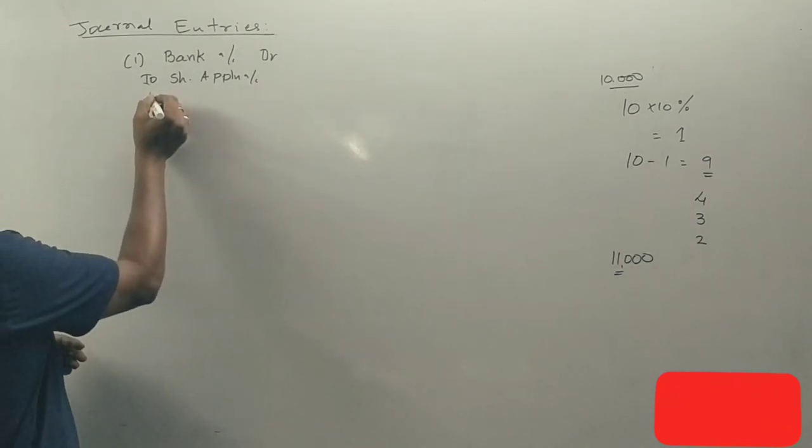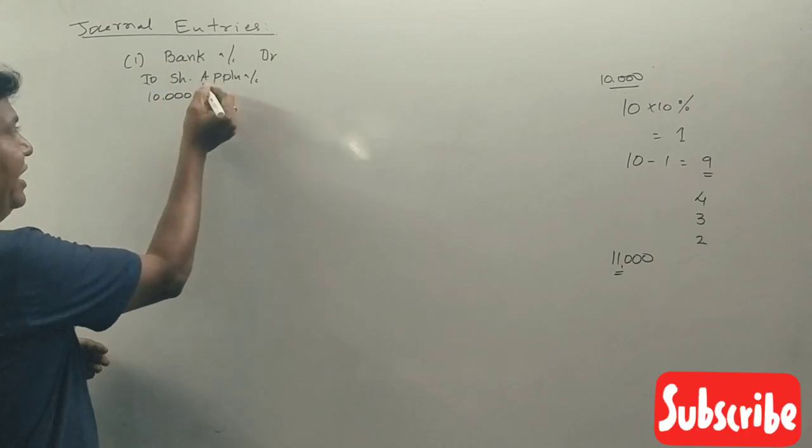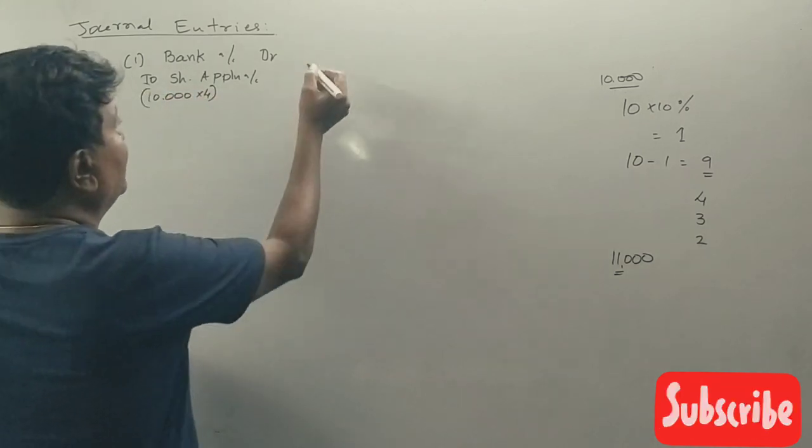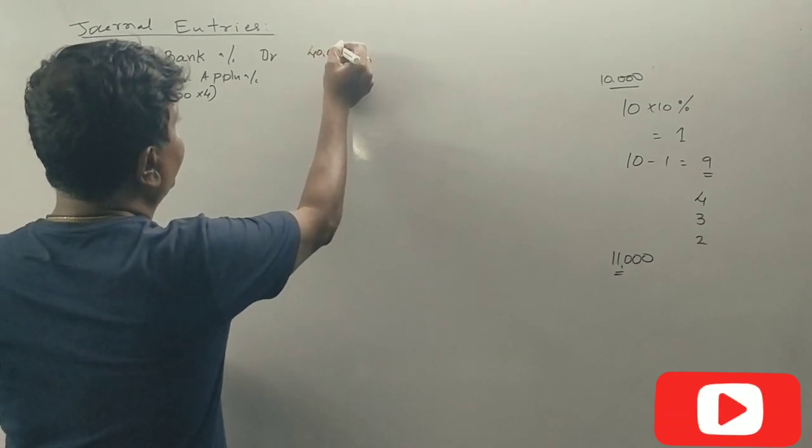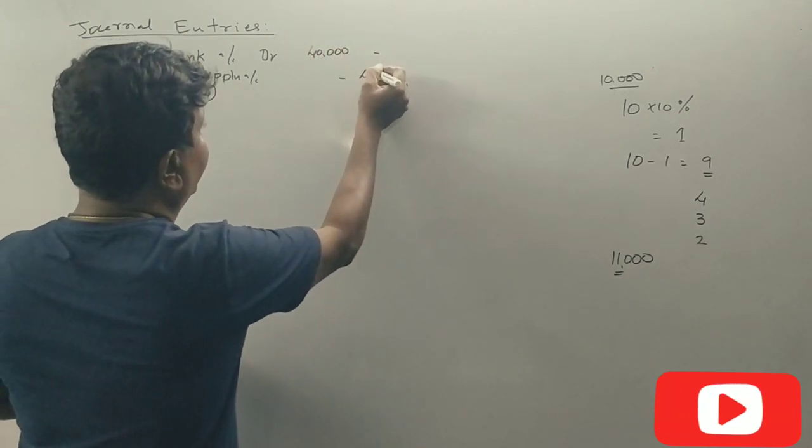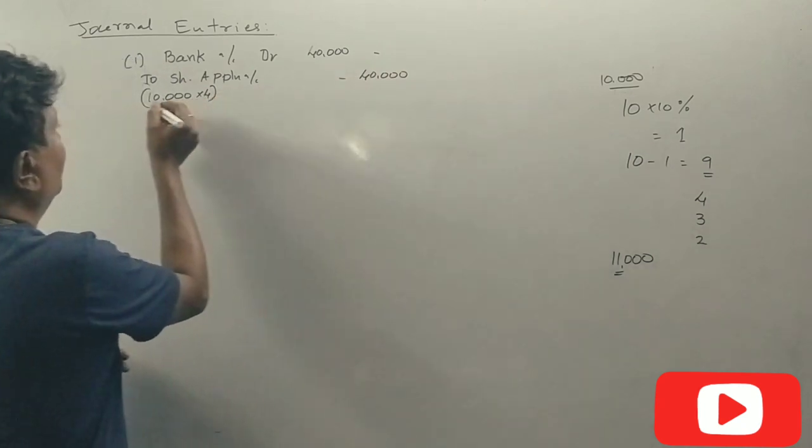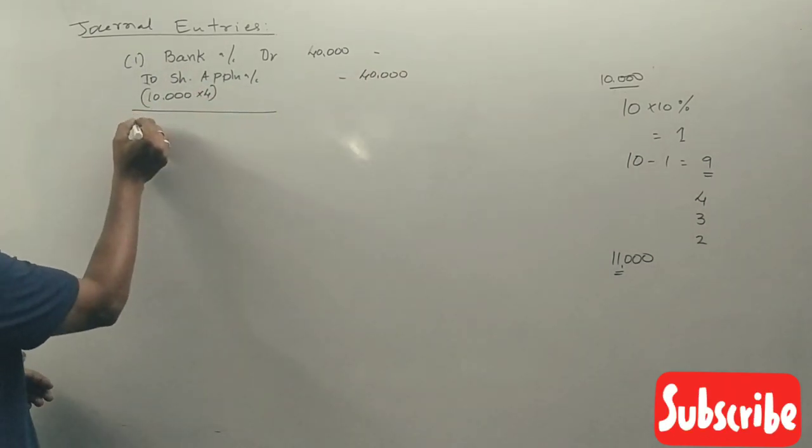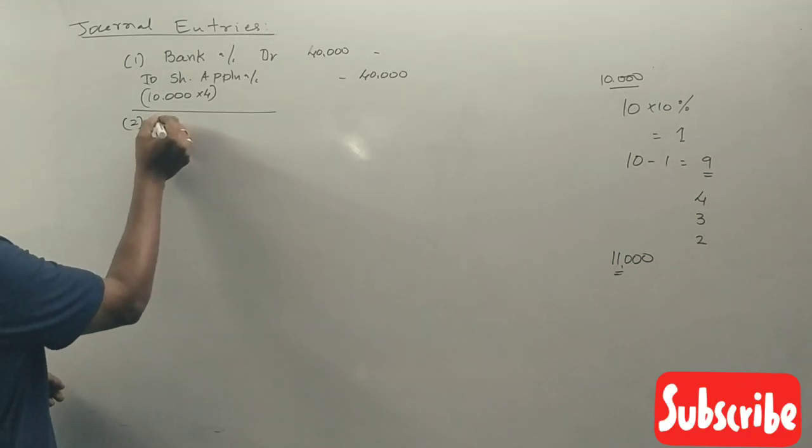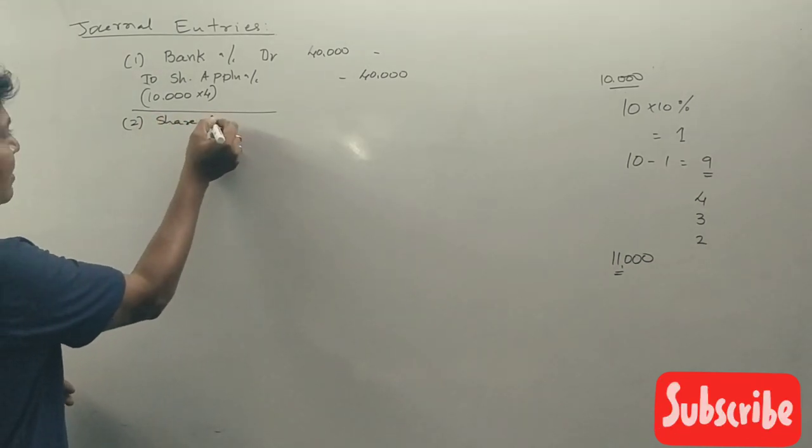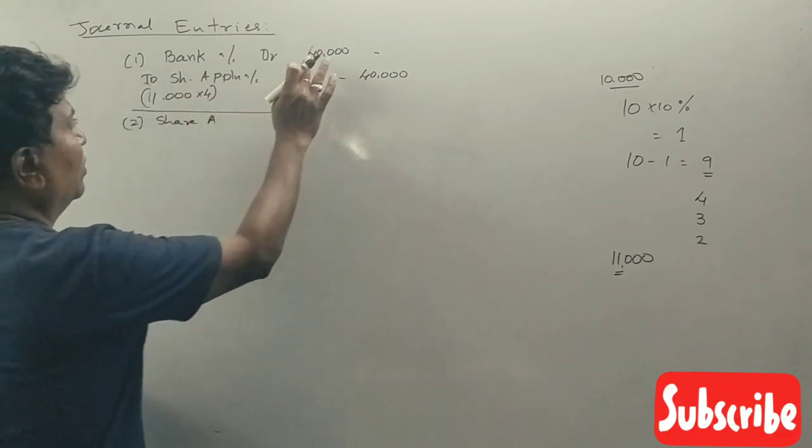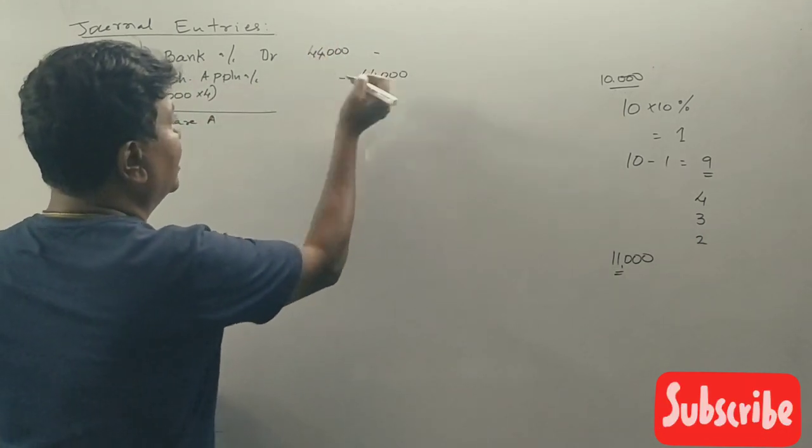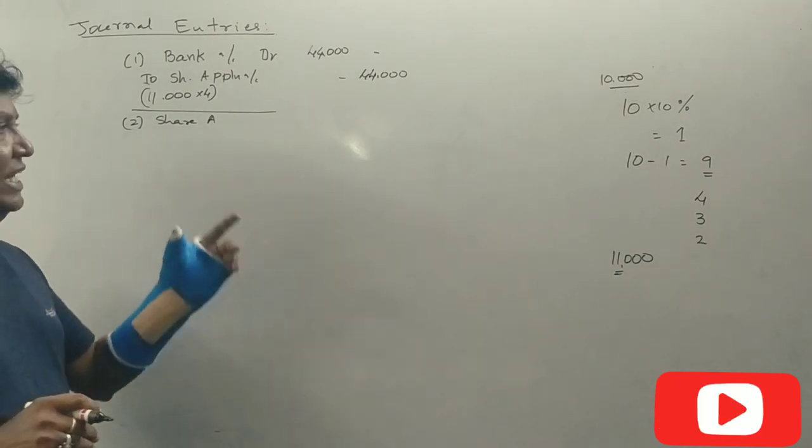Share Application Bank Account debit, Share Application Account 4 rupees, 40,000. This is 44,000. Being share application money received. So received 11,000 shares at 4 rupees equals 44,000.